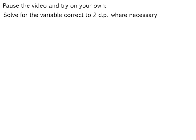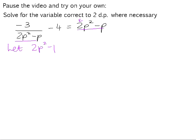There is an example in your homework book for you to try — pause the video and solve it: negative 3 over 2p squared minus p, minus 4, equals 2p squared minus p. We can see again that we have a repeated expression of 2p squared minus p. If I try multiplying through by the lowest common denominator, I'd get 4p to the power of 4, making it difficult to factorize. So because there's a repeated expression, I'll let it equal a different variable — I'll choose a — and wherever I see 2p squared minus p, I'll replace it with a.